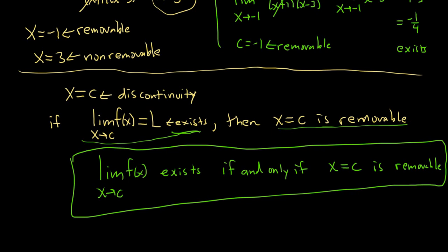So what does that mean? If the limit exists, it's removable. If it's removable, the limit exists. It also goes the other way: if the limit does not exist, the discontinuity is non-removable. Really useful.